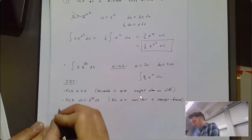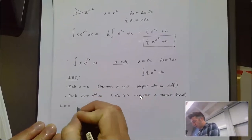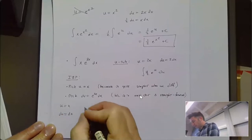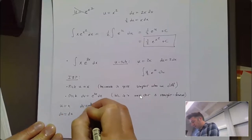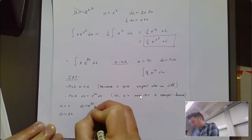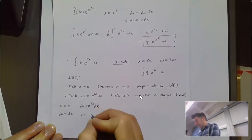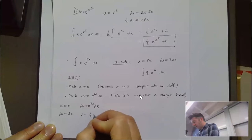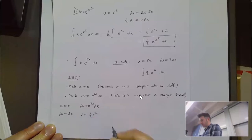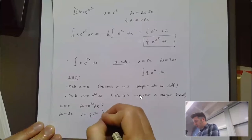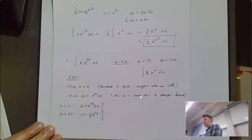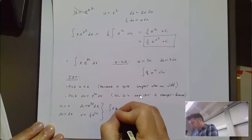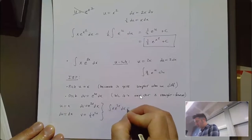Our u is x, our du is dx, our dv is e^(2x) dx, and our v — the anti-derivative of that — is one-half·e^(2x). All of that gets thrown into the formula. The integral of x·e^(2x) dx is equal to...